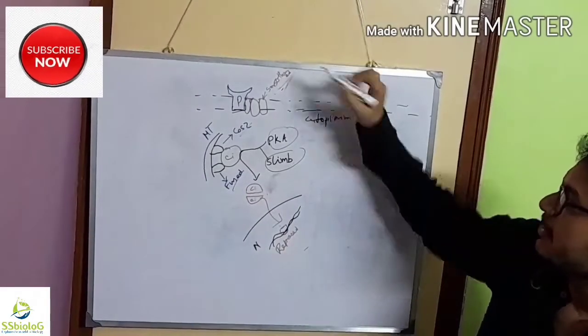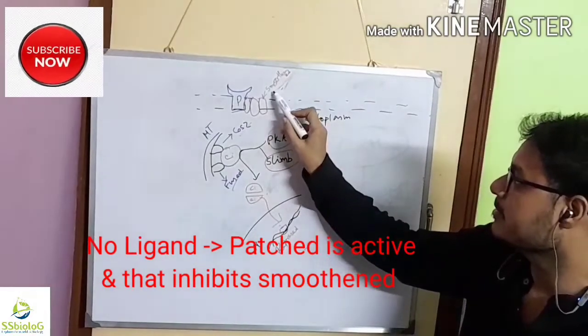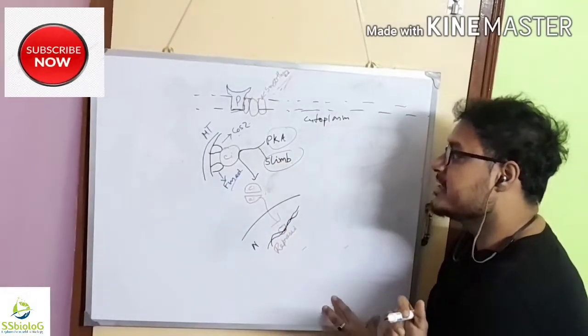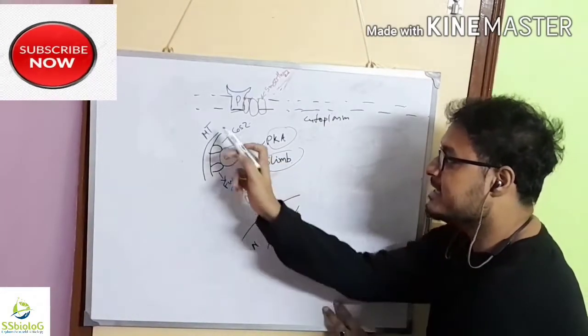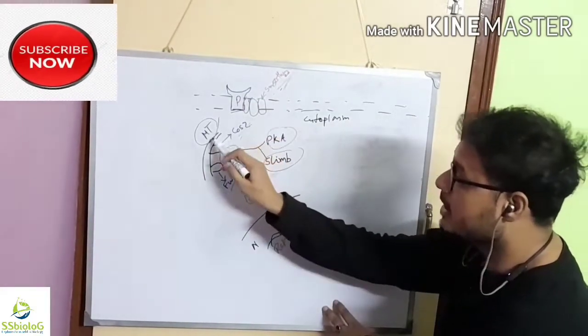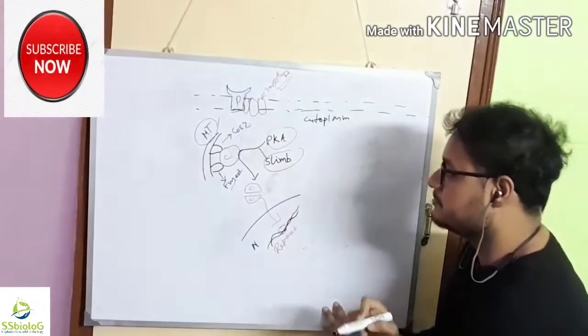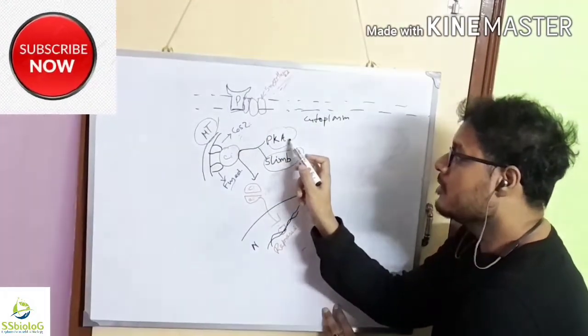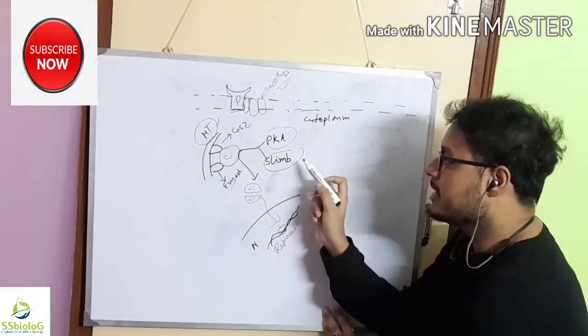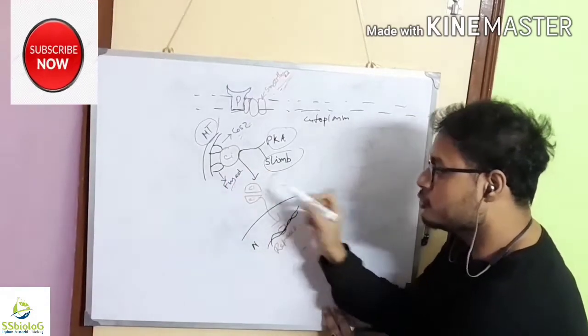When ligand is absent, the smoothened protein is inactive, and CI protein, that is cubitus interruptus protein, is tethered into the membrane by Cos2, into the microtubule by Cos2 and Fused protein. Now two other proteins, PKA and Slimb protein, come and clip the associated CI protein into two fragments.